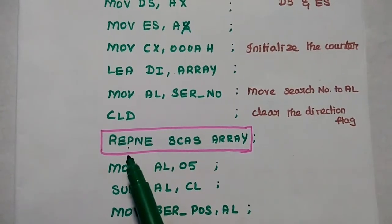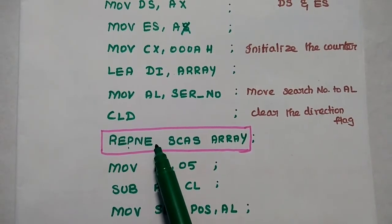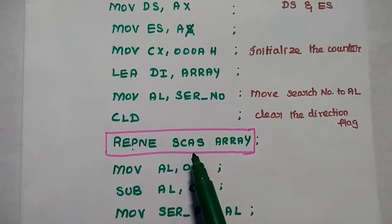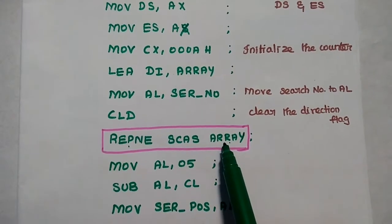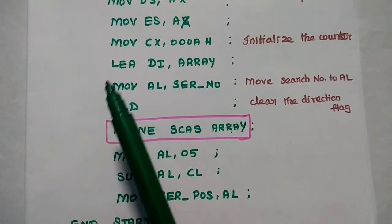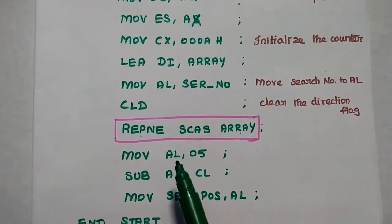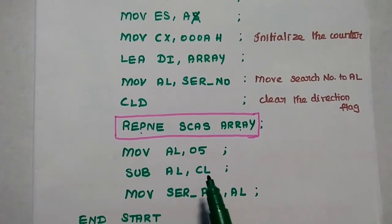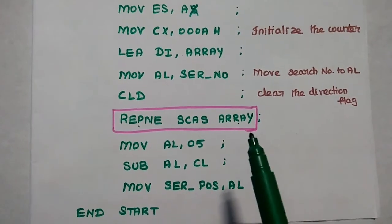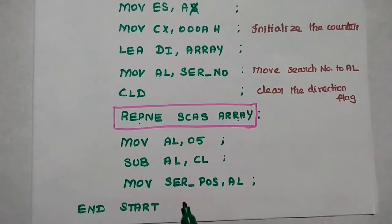REPNE means 'repeat if not equal' — it repeats the operation as long as the values are not equal. SCAS means scan or search for the character in the given array. So if the value is not equal, we process the same search again. Once the number is found, we move the array data to AL, subtract the counter register from AL to determine the position, then move AL to the 'search position' variable — that is the final answer.